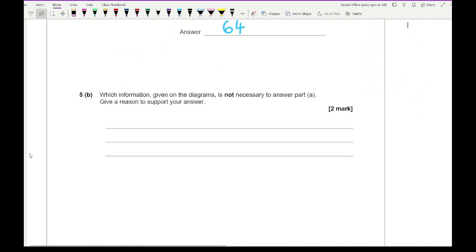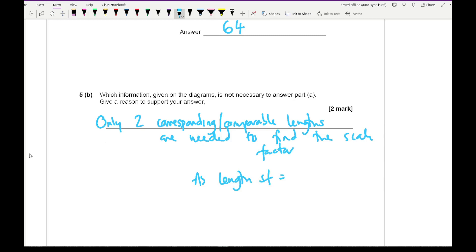Moving on to question 5b, it says, which information given on the diagram is not necessary to answer part A? Well, then, using the knowledge of similar area and similar volume, you could basically say something along the lines of that only two corresponding sides or comparable sides length are needed to find the scale factor. And you could say as long as the length scale factor is, let's say, 4, that means the area scale factor will be 4 squared. And the volume scale factor would be 4 cubed. And you could get the answer that way as well.